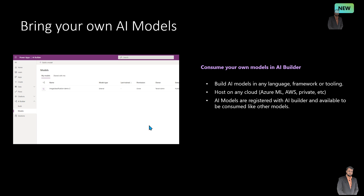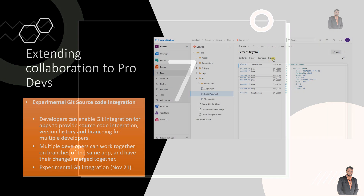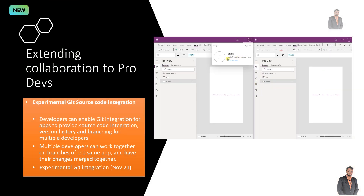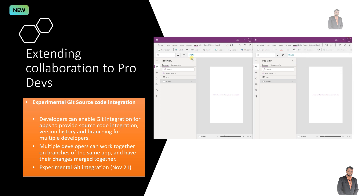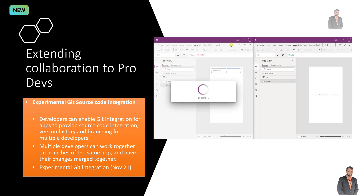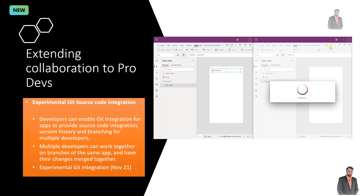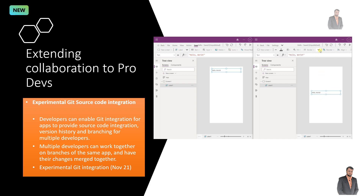This is also a game changer and really excites me to use it. The seventh important announcement is around extending collaboration to Pro Developers. This feature is available as an experimental feature for Git source code integration. As a developer, you can now enable Git integration for apps to provide source code integration, version history, and branching with multiple developers. I haven't checked this so far, but I will provide the latest information about this feature very soon in an upcoming video.